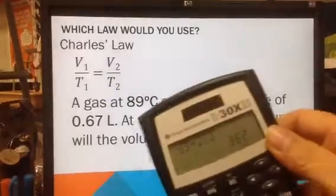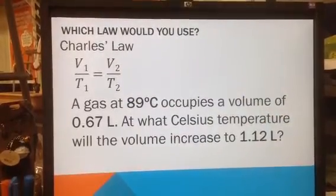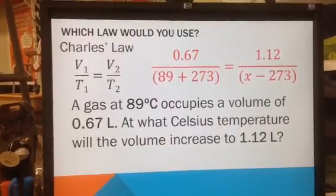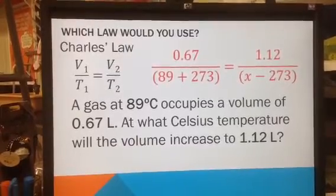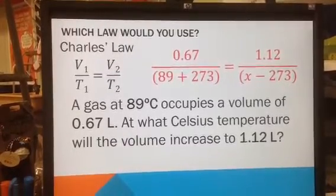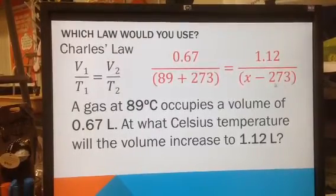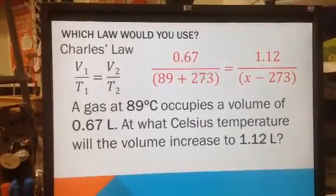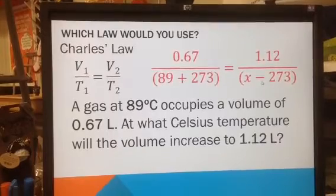When I set up my problem, I set it up 0.67 over 362 equals 1.12 over X. Now I've already set up my equation to show you the minus 273. You don't have to do this until the end. This piece you had to do at the beginning, but this piece you do after you solve.